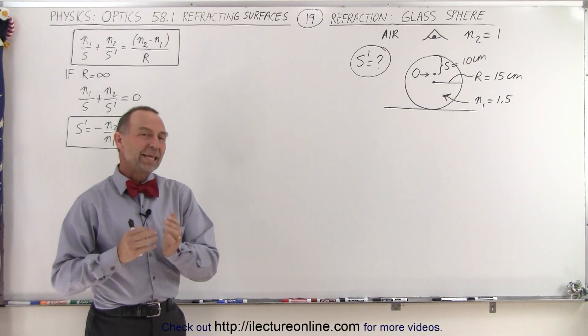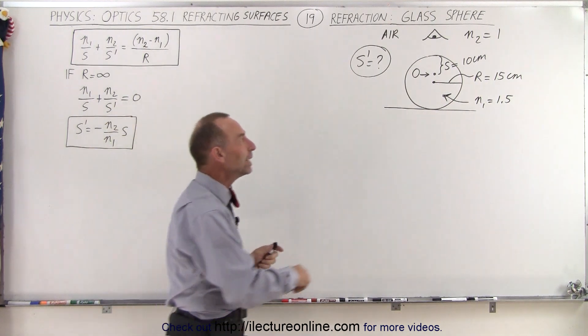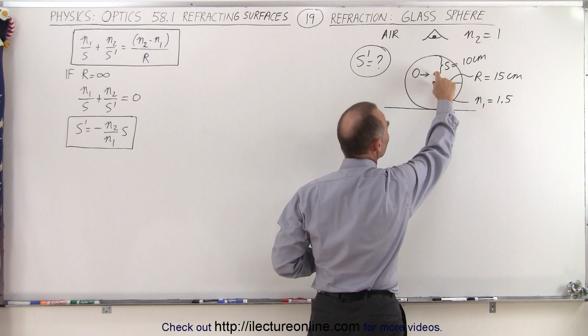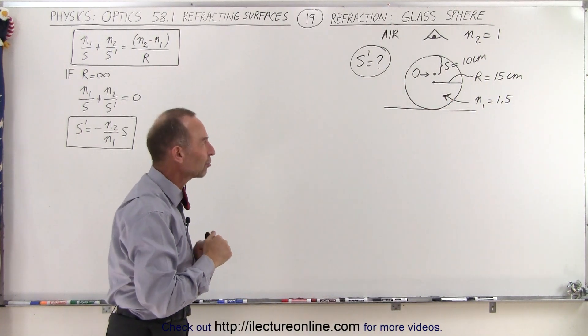Welcome to our lecture online. Here we're going to do an example where we have a glass sphere, radius 15 centimeters. Inside the sphere we put a small object 5 centimeters from the center, which means it's 10 centimeters from the edge of the sphere.